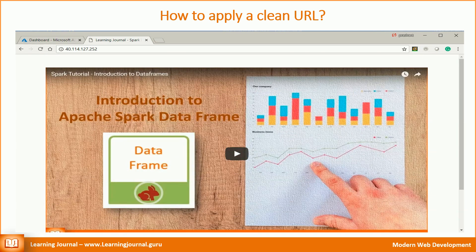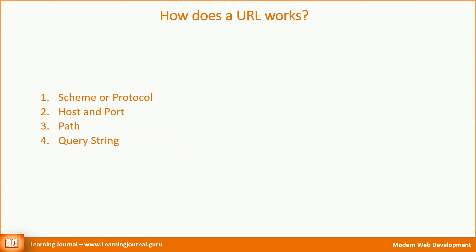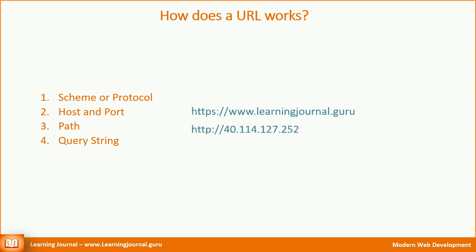Let's try to understand it. A typical web page URL is composed of four parts: the scheme or protocol, host and port, path, and query string. The first part is the protocol. Looking at any web page URL, it will be either HTTP or HTTPS at the beginning. These are the two protocols — I will cover more details about the protocol in a separate video. For now, let's assume that these two are different protocols.